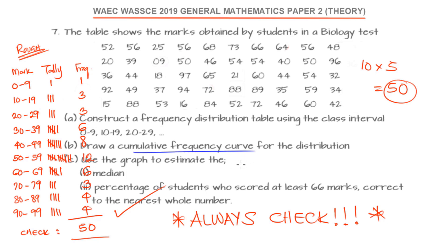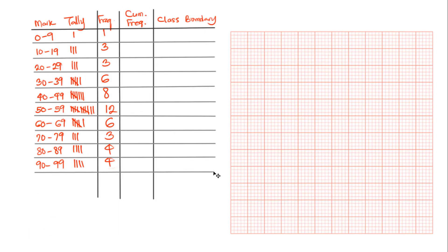Here we are told to draw a cumulative frequency curve for the distribution. That will be a curve in which we have the cumulative frequency on the y-axis. And then we are going to be using the class boundary, and we are going to draw that graph, the cumulative frequency against the upper class boundary. Here, already we have our mark, we have our tally, we have our frequency, but we need the cumulative frequency and we need the upper class boundary.